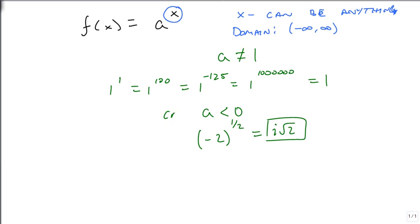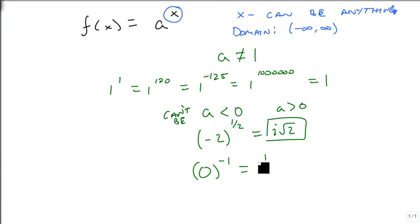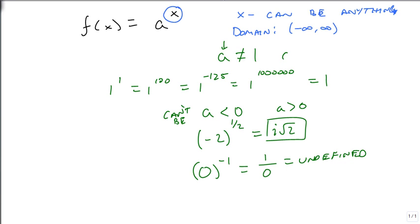Instead, A has to be greater than 0. It also can't be 0, because 0 to a negative power would be 1 over 0, which is undefined. So for all of the functions we're going to look at, A can't be 1 and has to be strictly greater than 0. It can be a fraction or a decimal — it just can't be 0. And that's our definition of an exponential function.